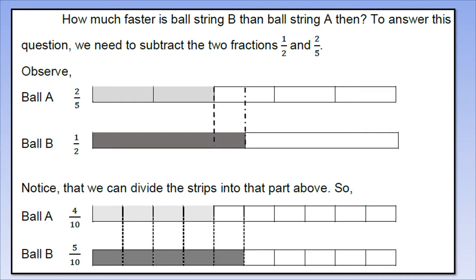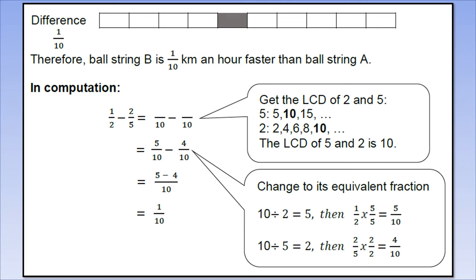Now observe. Look at the fraction strip of ball A and ball B. Notice there are broken lines. We can divide the strips into the parts above. The size of the broken lines at the top is how we will divide the fraction strips we see below. Ball A is 4/10 and ball B is 5/10. The difference is 1/10. Therefore, ball string B is 1/10 km per hour faster than ball string A.